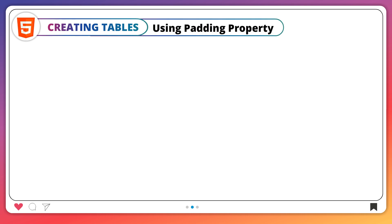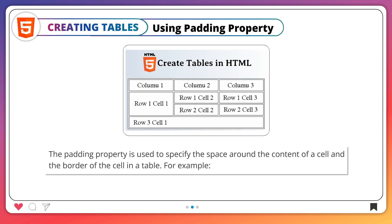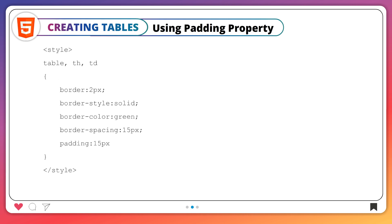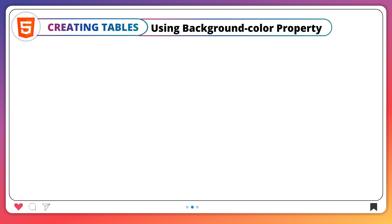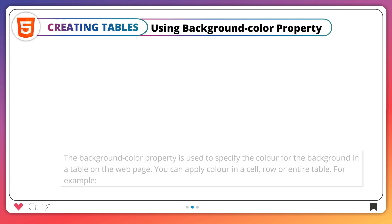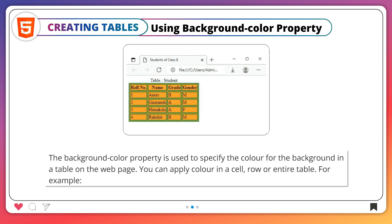Using the padding property: the padding property is used to specify the space around the content of a cell and the border of the cell in a table. For example. Using the background-color property: the background-color property is used to specify the color for the background in a table on the web page. You can apply color to a cell, row, or entire table.